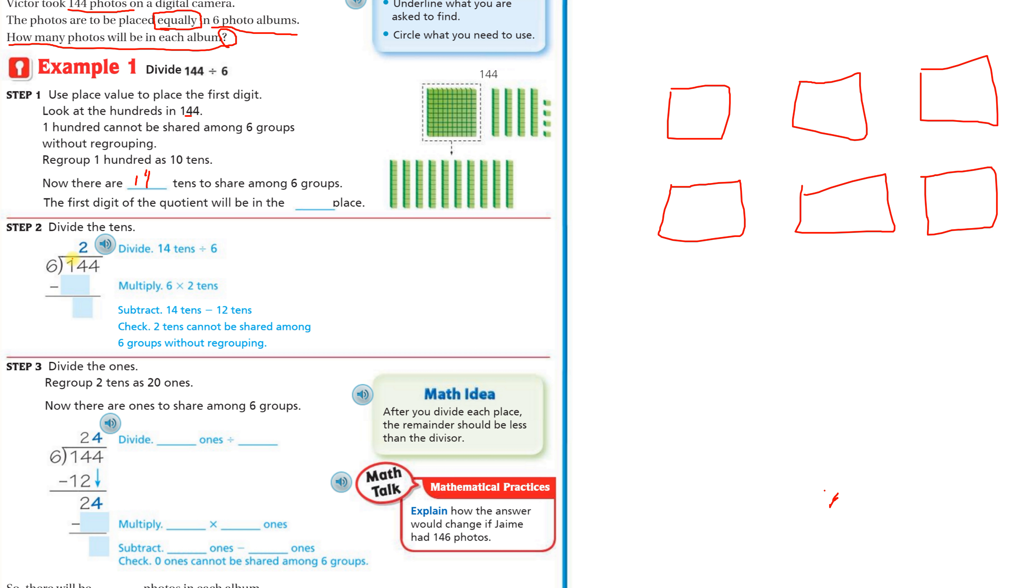We have the 10 tens from 100 and then the four tens from 40 to share among the six groups. You look at one number at a time. Can six go into one? No, six is bigger than one. Can six go into 14? Yes, six can go into 14 two times. Then you multiply two times six, which is 12. Then you subtract 14 minus 12, that's two. And then you bring down your four.